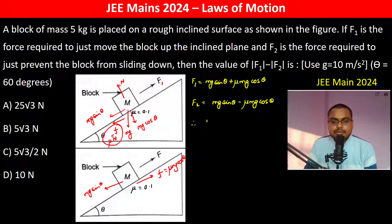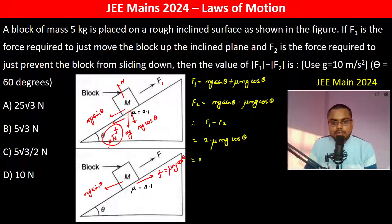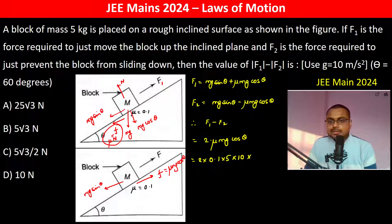Therefore F1 minus F2 equals 2 times mu Mg cos theta. This equals 2 times 0.1 times 5 times g, where g is 10. The angle theta is 60 degrees, so cos theta equals root 3 over 2.